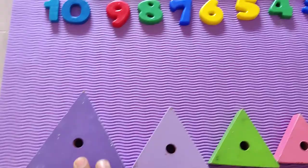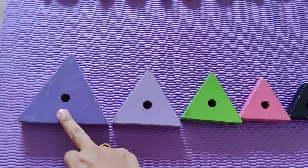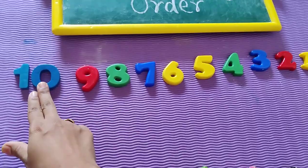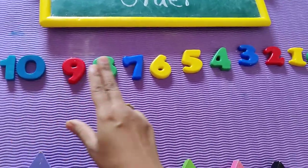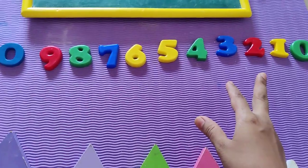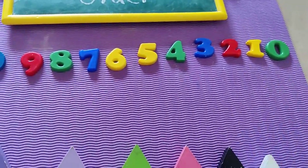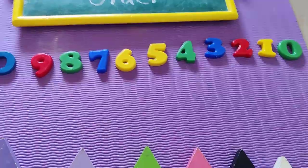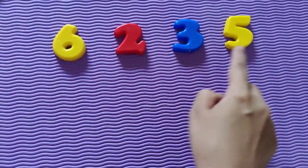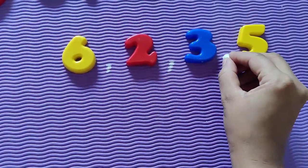In the same way, we have arranged the numbers also from biggest to smallest. From the numbers 0 to 10, descending order goes from the biggest number to the smallest number. Now, four numbers are selected: 6, 2, 3, and 5. We will arrange these numbers in ascending order.